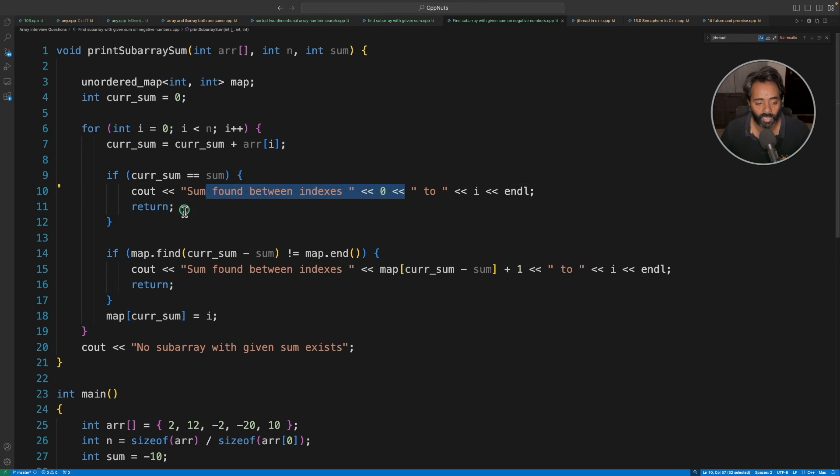If it is not, this is the map where you will say current_sum - sum exists. If it exists then we have found that, and I told you we have to do plus 1, so here we are doing plus 1.